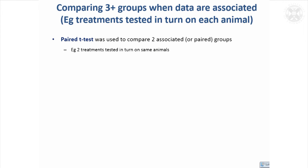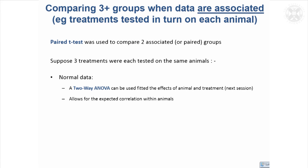We thought about the paired t-test when we have paired data. Sometimes three groups of data will be associated — for example, three measurements taken on the same animal. In that case, we can use something called a two-way ANOVA. If you had three measurements on one animal under three different treatments, you could account for not only the effect of the treatments but also put the animal as a factor in the model.